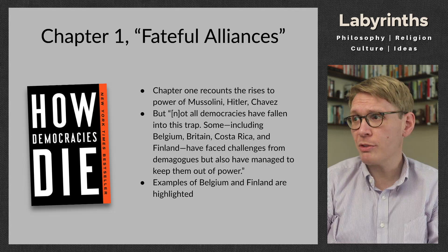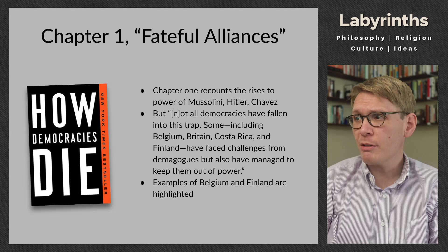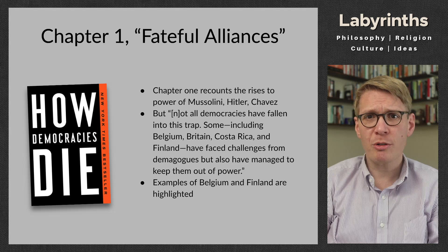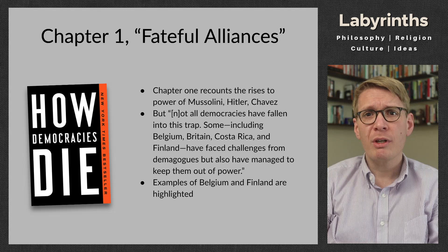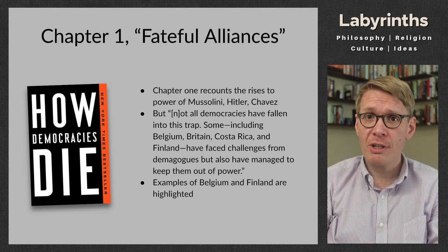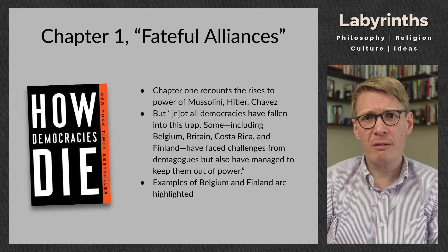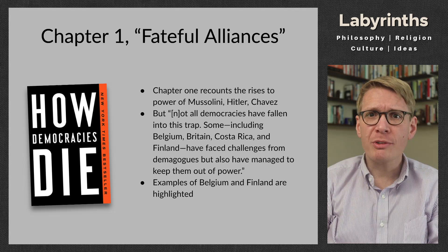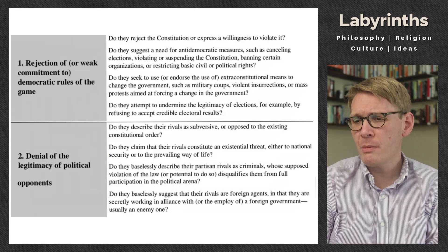Not all democracies have fallen into this trap, as we see in Mussolini, Chavez, and Hitler's cases. Some — including Belgium, Britain, Costa Rica, and Finland — have faced challenges from demagogues but managed to keep them out of power. The case of Belgium is interesting: in the 1930s, a Catholic populist fascist leader was rejected by the Catholic party, who chose to side with the socialists against this fascist leader because they regarded his policies as unacceptable. There you have a group siding with their supposed opponents in order to protect the institutions of the society.